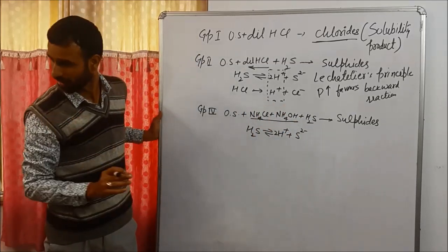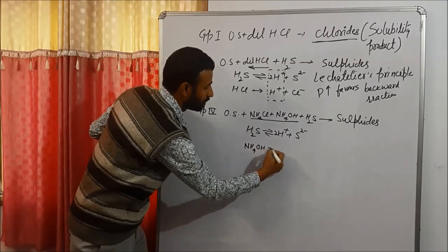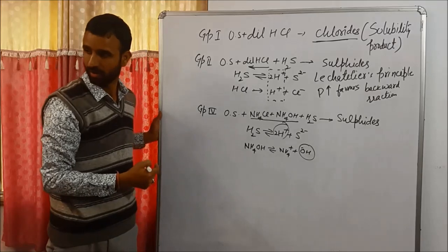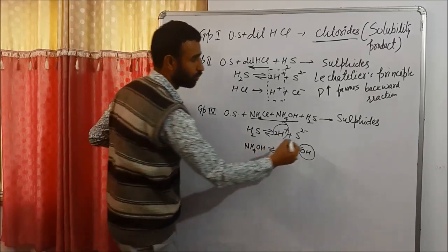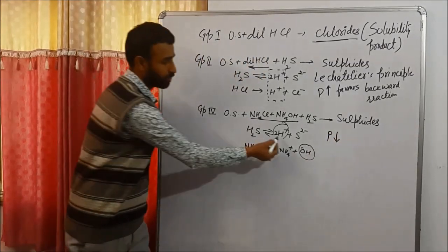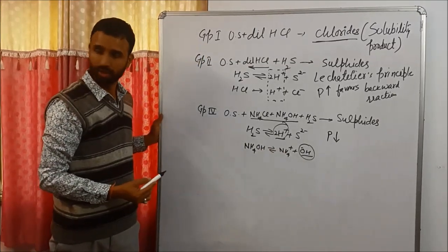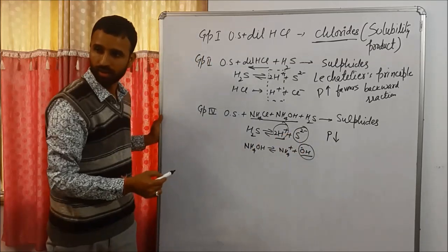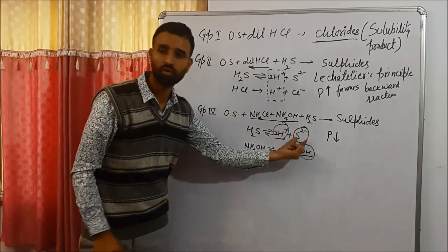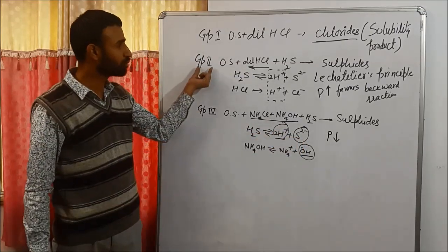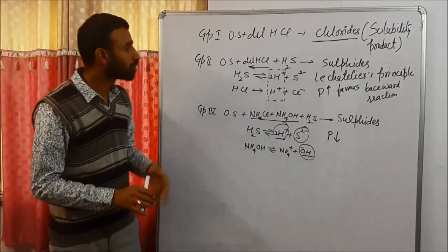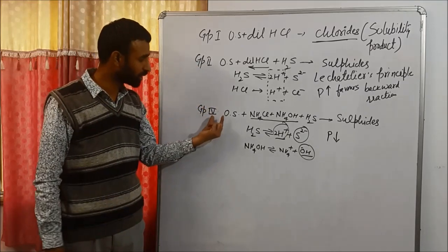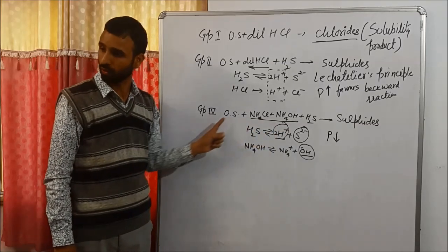Ammonium hydroxide gives OH⁻ ions. As we get OH⁻ ions, H⁺ and OH⁻ combine to give H₂O. So one of the products — H⁺ ions — is removed by OH⁻. One of the products is decreased, so the equilibrium shifts forward, and more sulfide ions are formed. That means to precipitate group 4, more sulfide ions are required, while to precipitate group 2, fewer sulfide ions are required. So the solubility product of sulfides of group 2 is low, and the solubility product of sulfides of group 4 is higher.